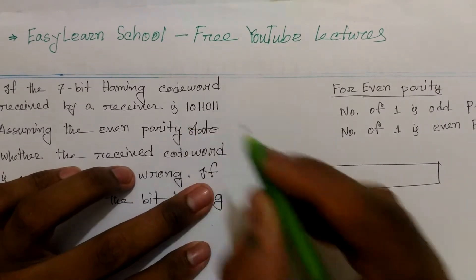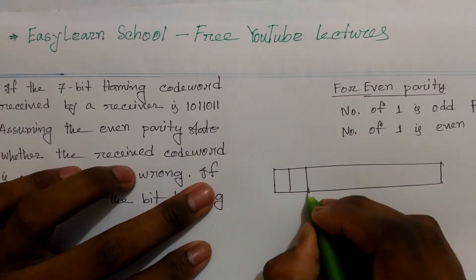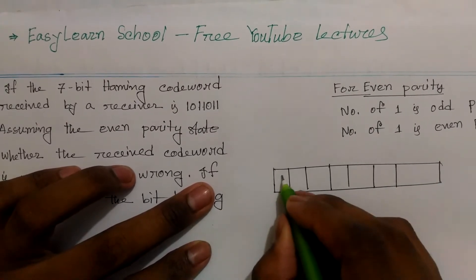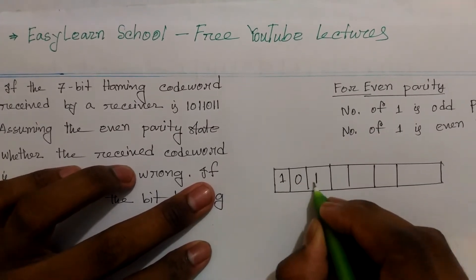The positions are 1, 2, 3, 4, 5, 6, 7. The received bits are: 1, 0, 1, 1, 0, 1, 1.